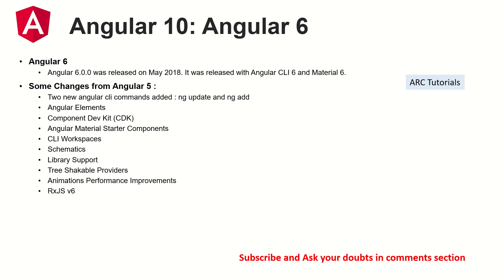Angular 6 introduced two major commands: ng-update and ng-add, which make transitioning and upgrading Angular apps easy and smooth. They also introduced CDK (Component Dev Kit), new elements, better starter components, and support for Angular Material 6. There were better schematics, tree-shakable providers for optimized builds, better animations, and support for RxJS version 6 — important because all Angular router value changes use observables and are heavily dependent on RxJS.